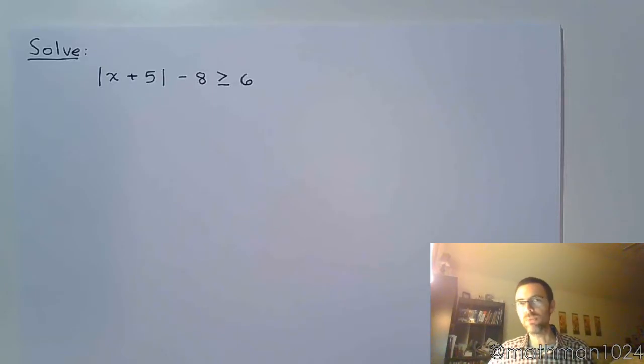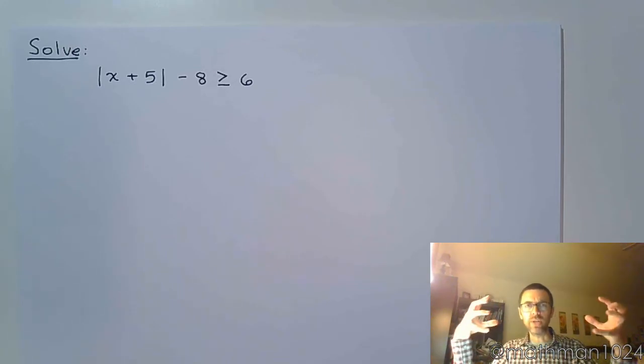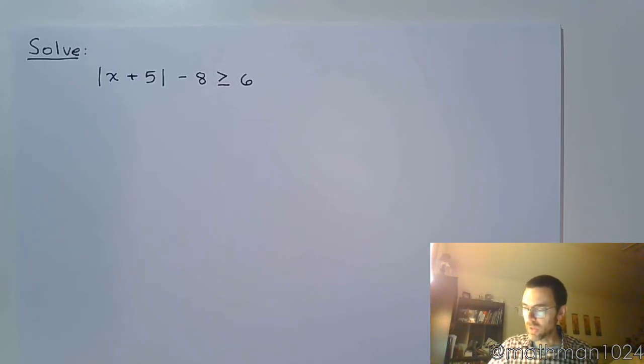We're back with more absolute value inequality goodness. Just like we mentioned with absolute value equations, you have to get the absolute value by itself first before you can figure out if you have a restriction or if you're pushing away.